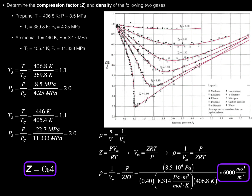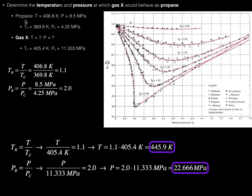We could use the compression factor and the data to calculate the density. This kind of problem applies when you know the temperature, pressure, critical temperature, and critical pressure for at least one gas. Now we're going to do a problem where we know those values for one gas, but we have an unknown gas — gas X — and we want to determine the temperature and pressure at which gas X would behave as propane would. This is a principle of corresponding states problem.